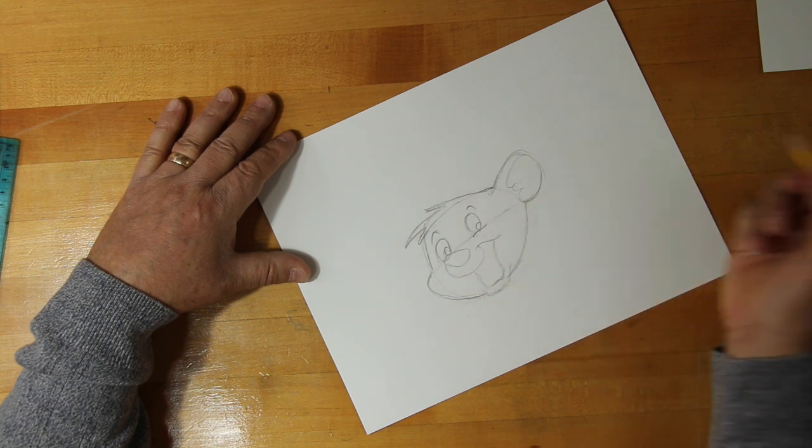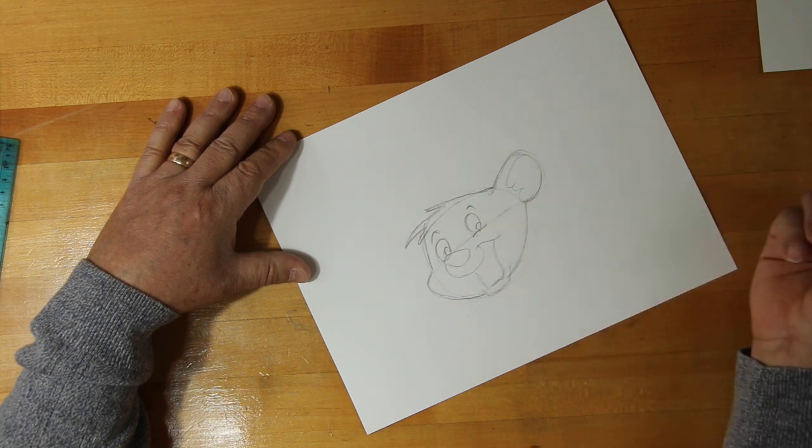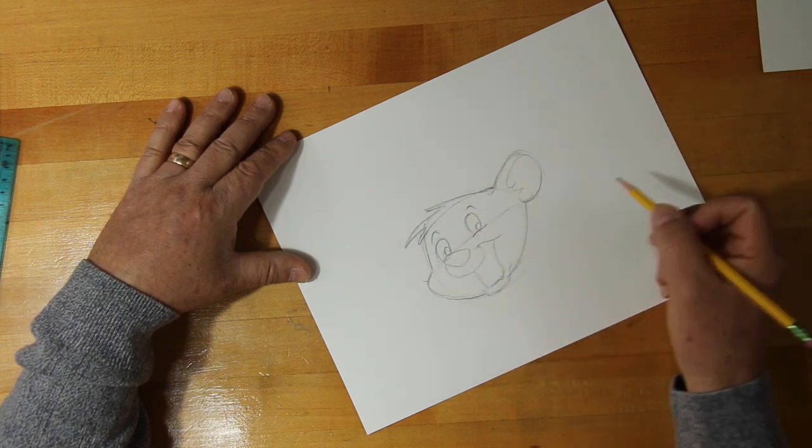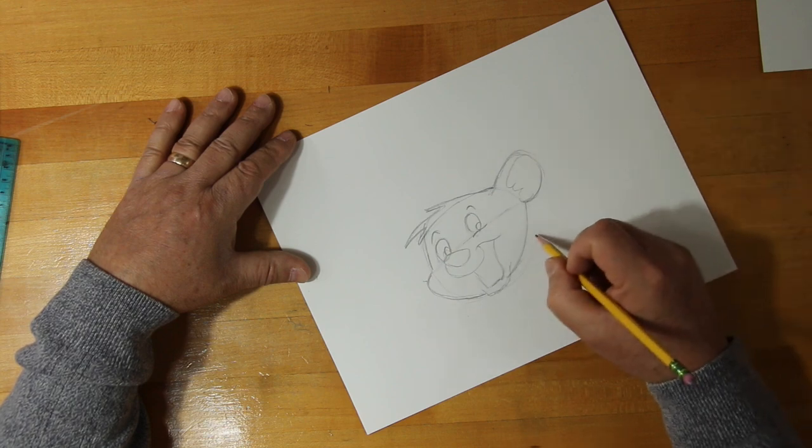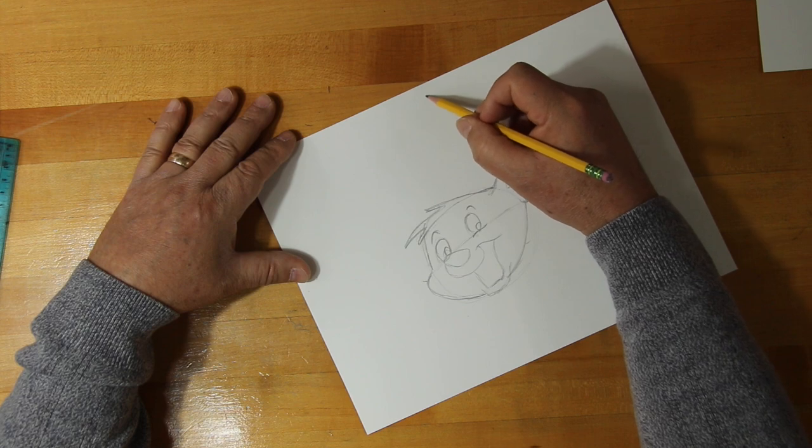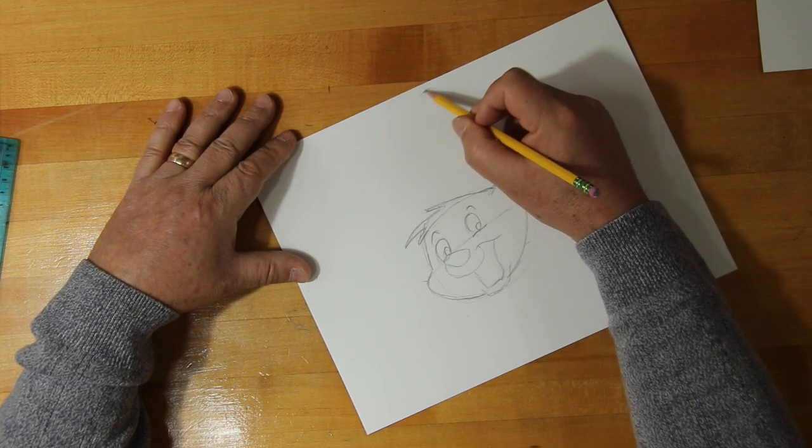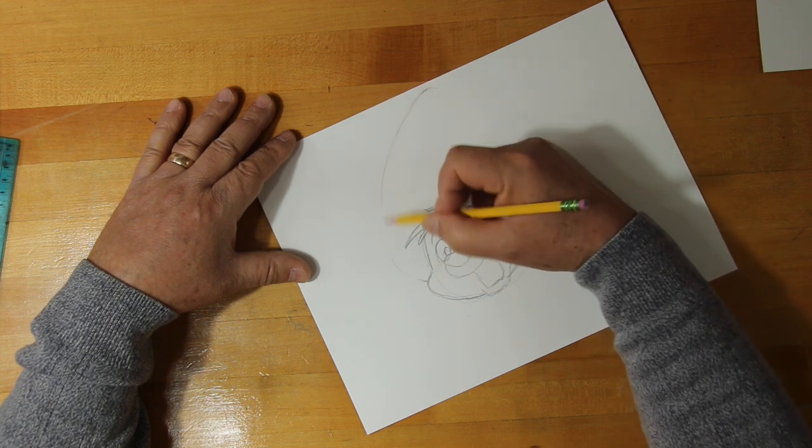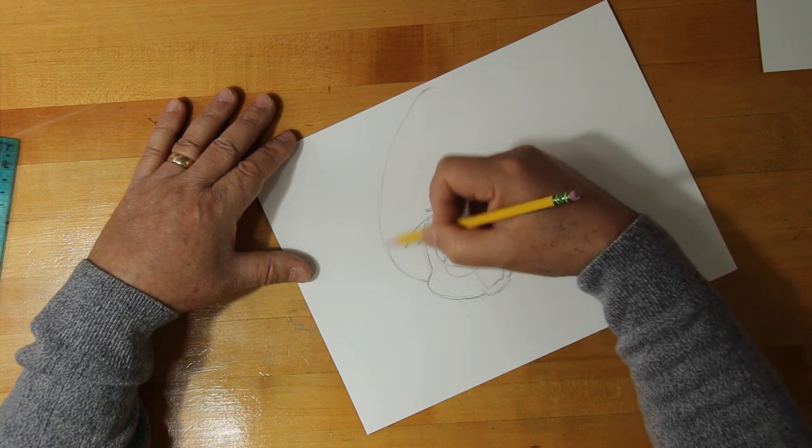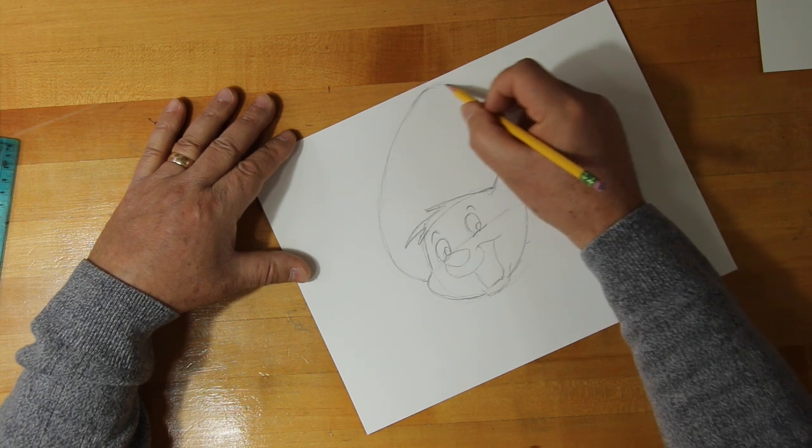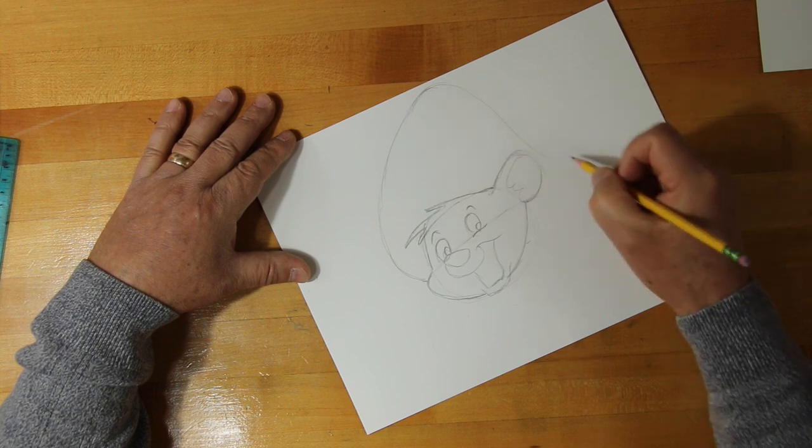Underneath his eye it's got this little swoosh right there. And then as it comes down it gets very close to this ear.